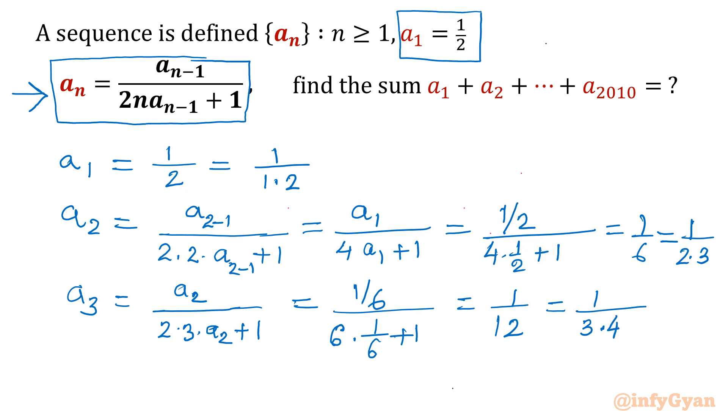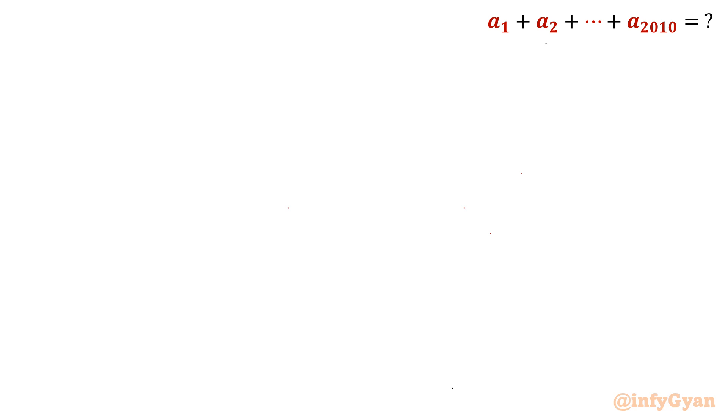Let us calculate a4, and then we will be calculating a2010. So a4 I will be writing a3 over 2 times 4 times a3 plus 1. a3 is 1/12, so 1/12 divided by 2 times 4 is 8 times 1/12 plus 1.